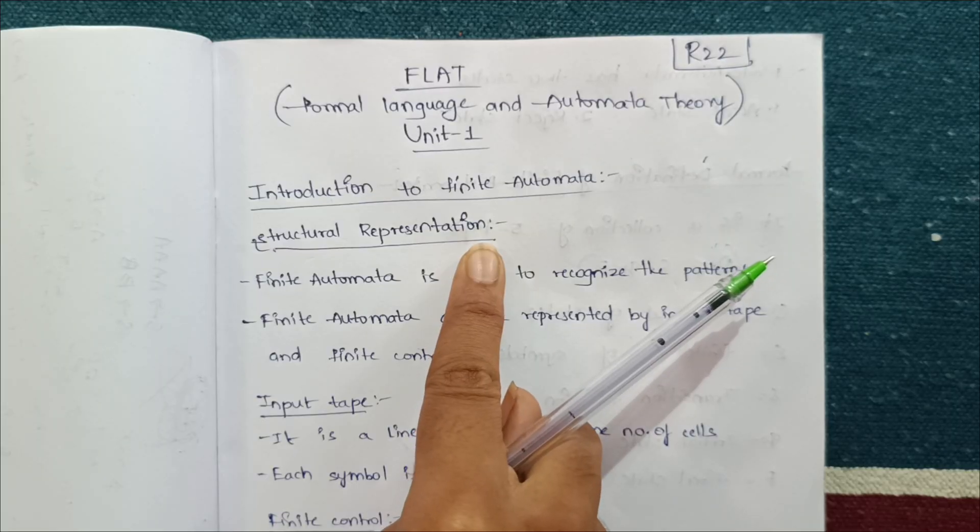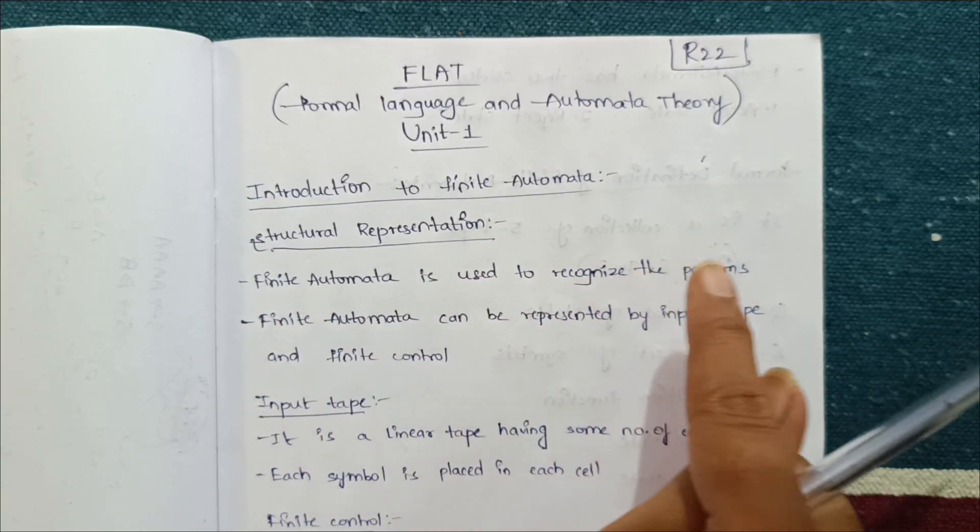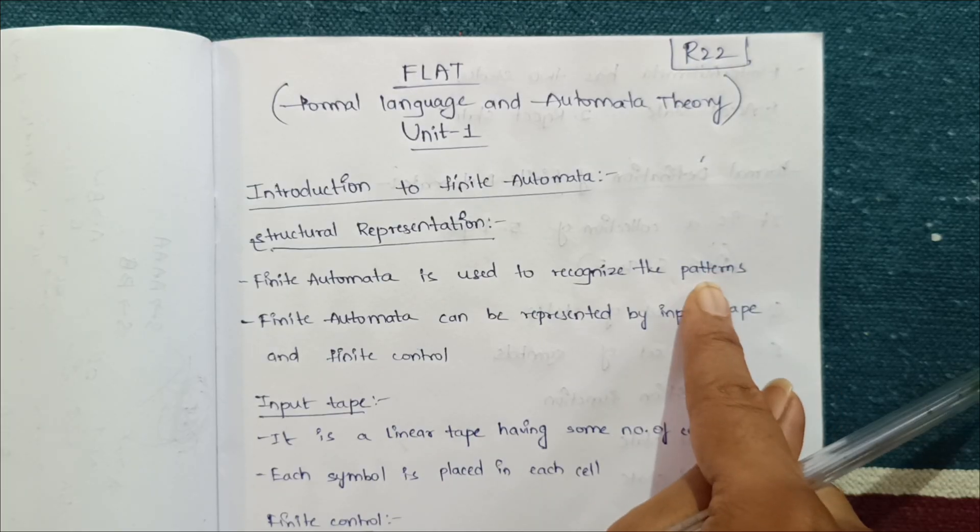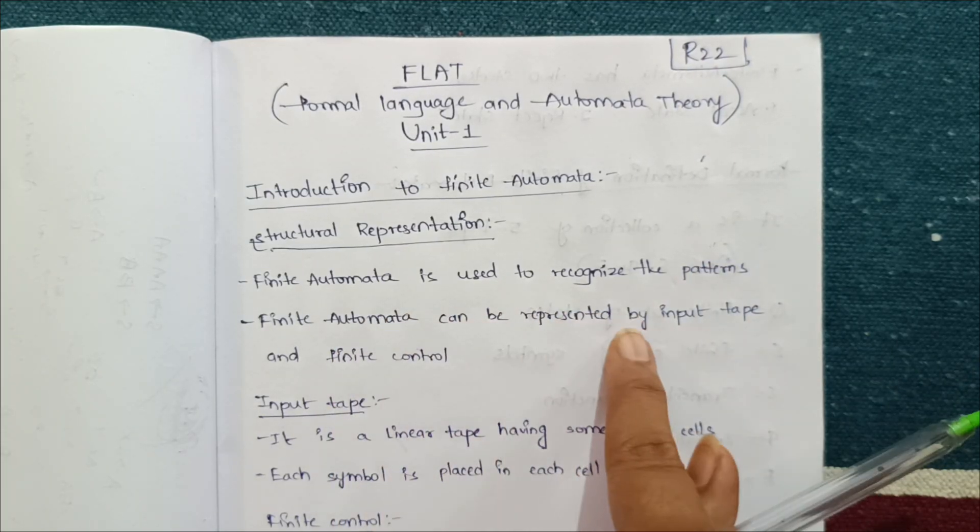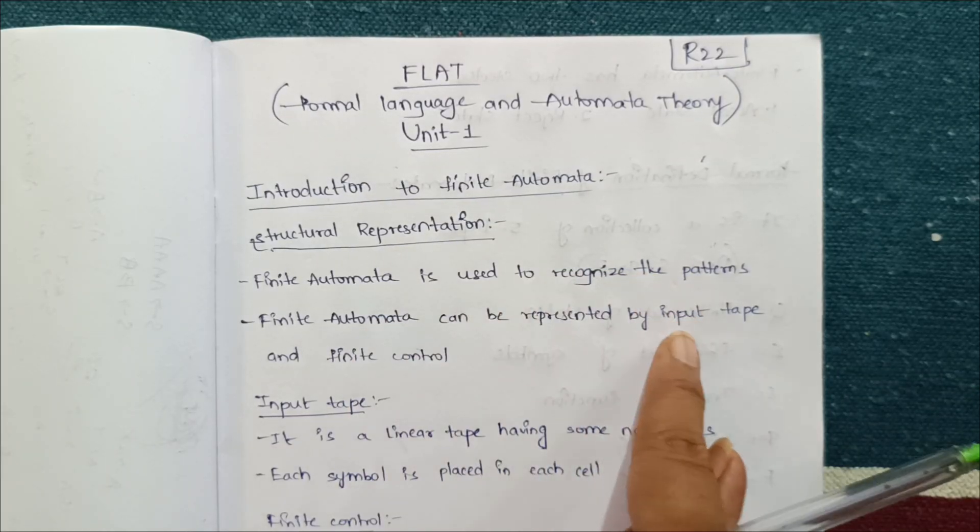Firstly, we'll see about the structural representation of finite automata. Finite automata is used to recognize the patterns, and it can be represented by input tape and finite control. Finite automata has input tape and finite control to represent.